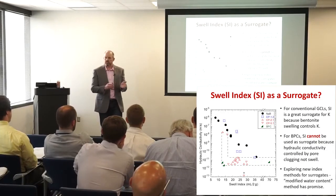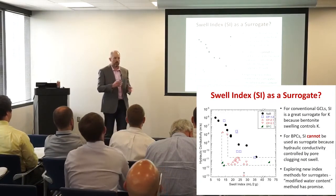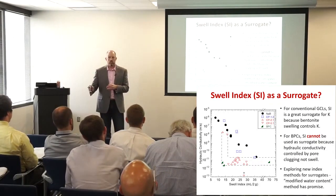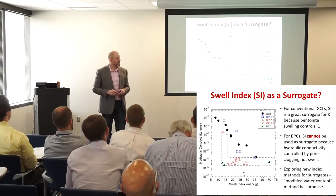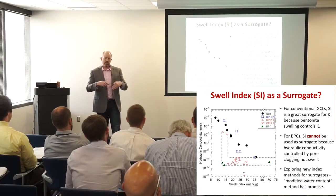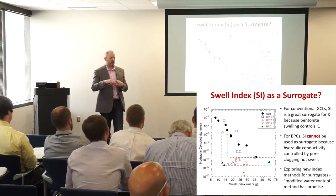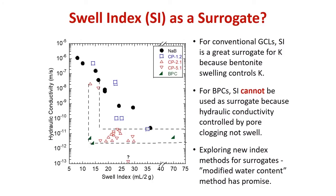Swell index is still part of the decision-making process. We don't have other tools yet, though we're working on building them within ASTM — it's an evolving practice. If swell or fluid loss numbers come back outside the traditional historic values specified in GRI GCL3 or ASTM D5889, don't be alarmed — the mechanisms are different.